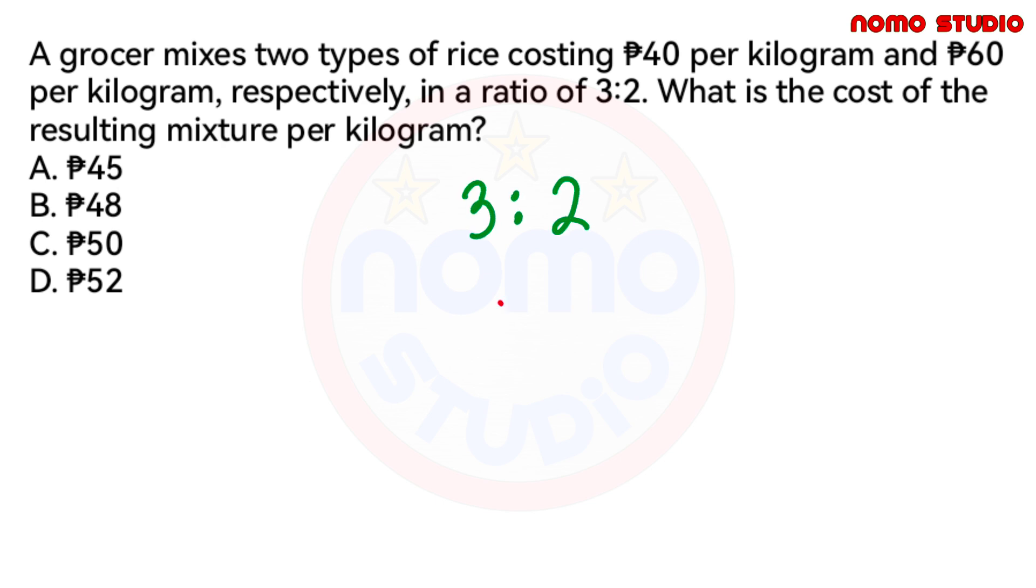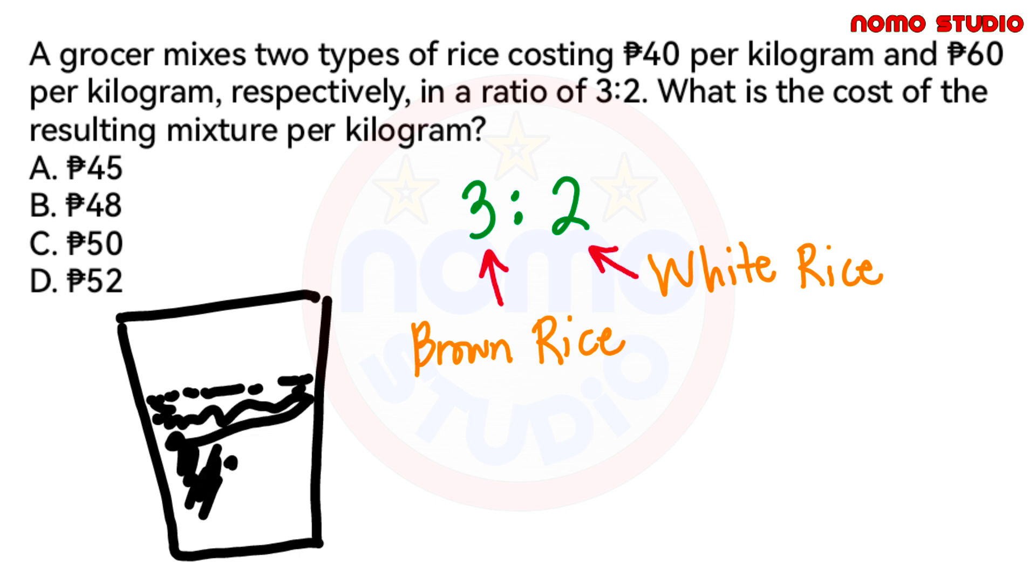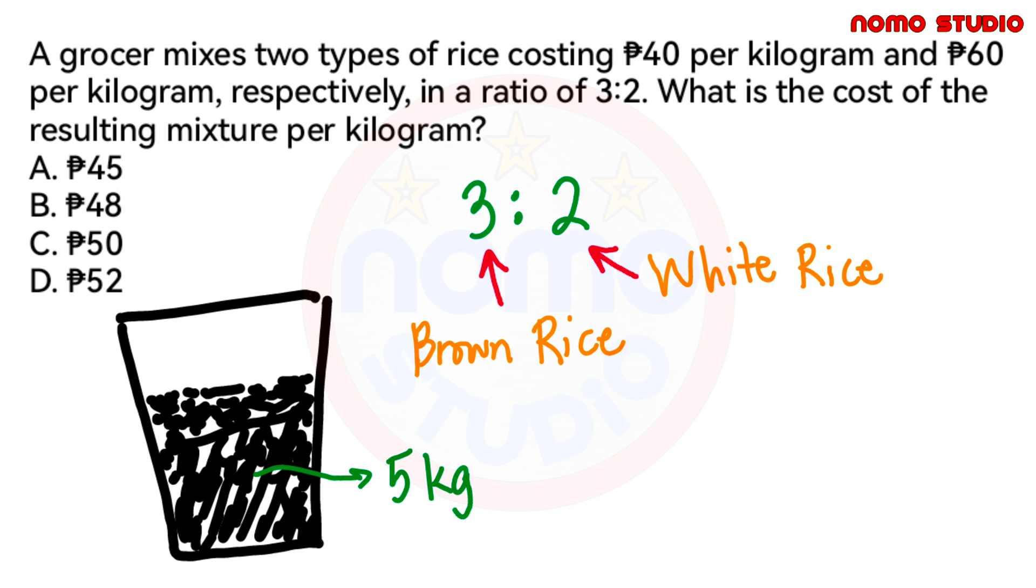Meaning, for every 3 kilograms of the first type of rice, you must add 2 kilograms of the second type of rice. So halimbawa, ang ating first type of rice is sabihin natin brown rice, at ang second type of rice naman is white rice. So ibig sabihin, for every 3 kilograms of brown rice, there should be 2 kilograms of white rice in a mixture. This gives us a total of 5 kilograms in a mixture.